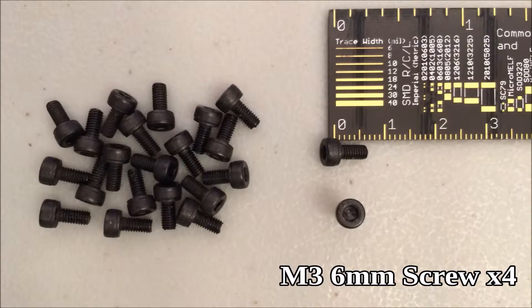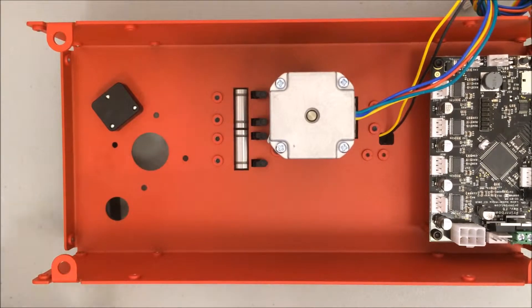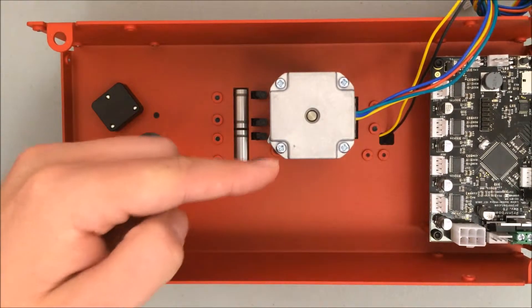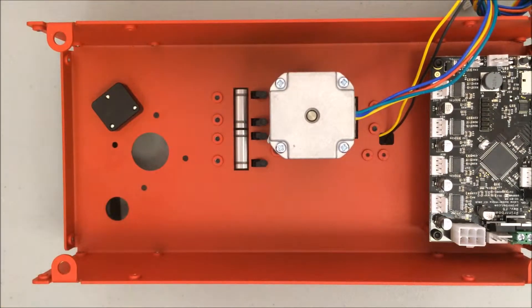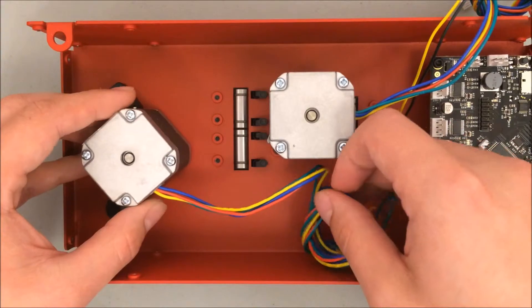This takes four of the M3 6mm screws and one stepper motor. I flipped the base upside down just to show you where the Z-motor gets installed. It goes in this spot here, and it's important that the wires head towards the printer board. We can put the Z-motor in here just to show you where it goes, but you'll actually need to install it from the top.